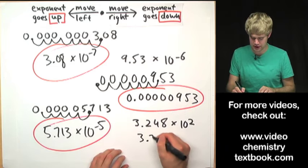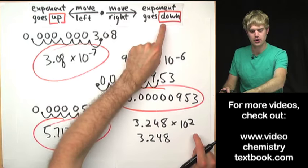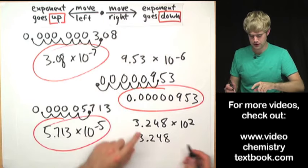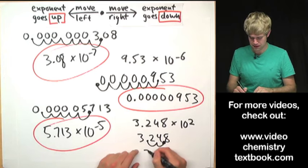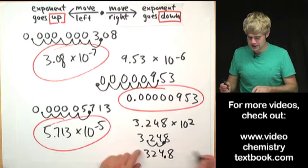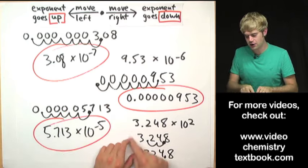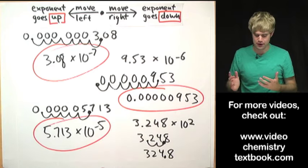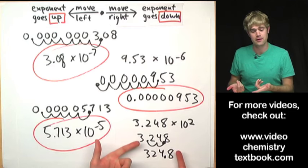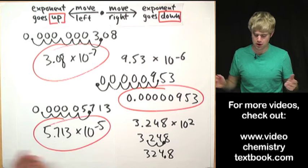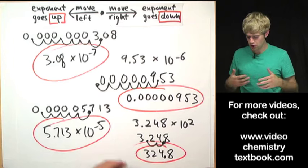Finally, taking a number out of scientific notation. Starting at 10 to the second, I want to get to 10 to the zero, so move the decimal place to the right: 10 to the second, 10 to the first, 10 to the zero — giving 324.8. Sometimes this can seem confusing because you're used to adding or getting rid of zeros, but sometimes all you have to do is move the decimal place in between existing digits. You don't introduce or remove any zeros — that's fine.